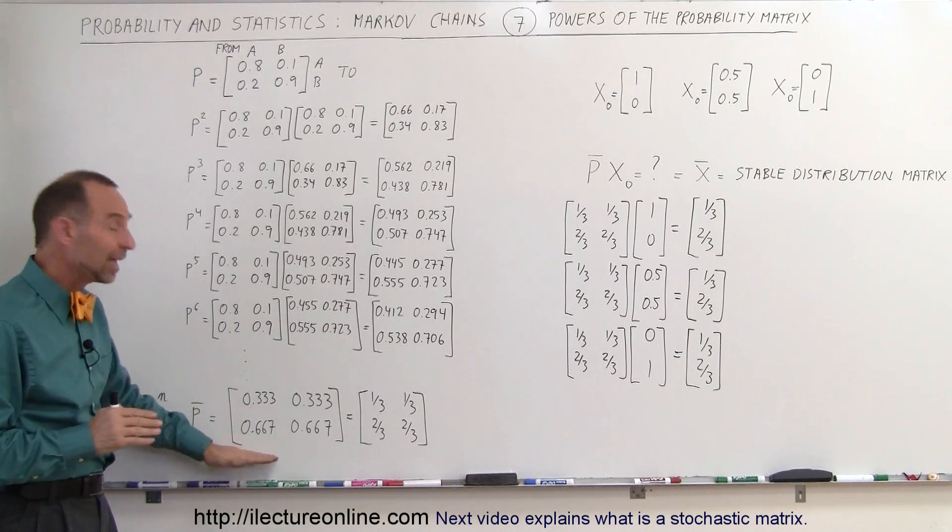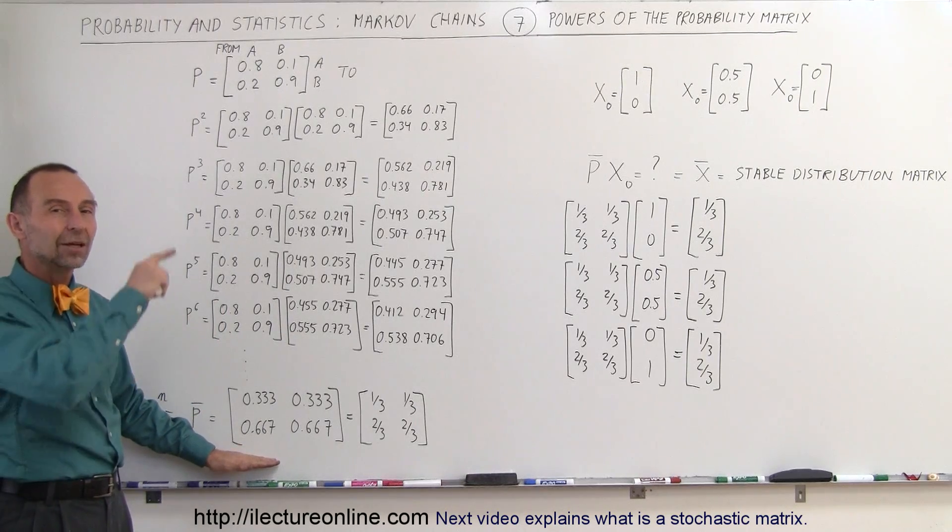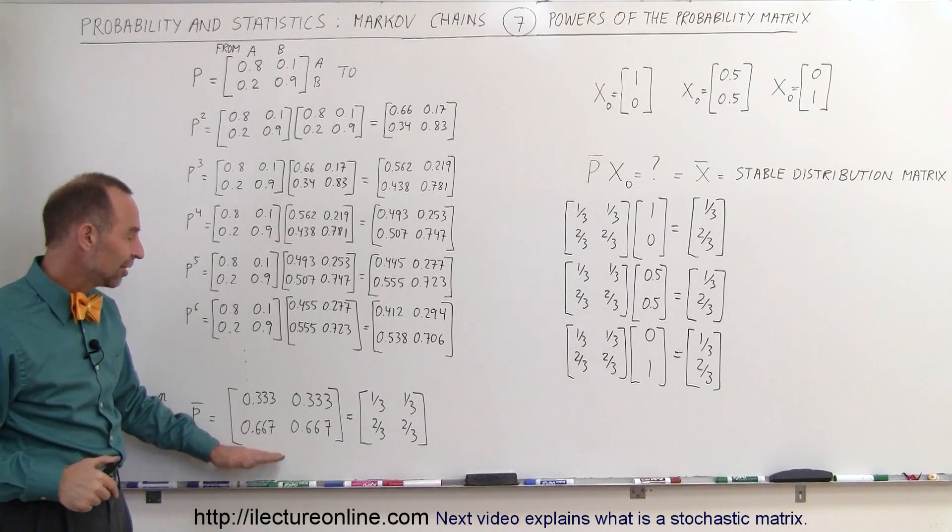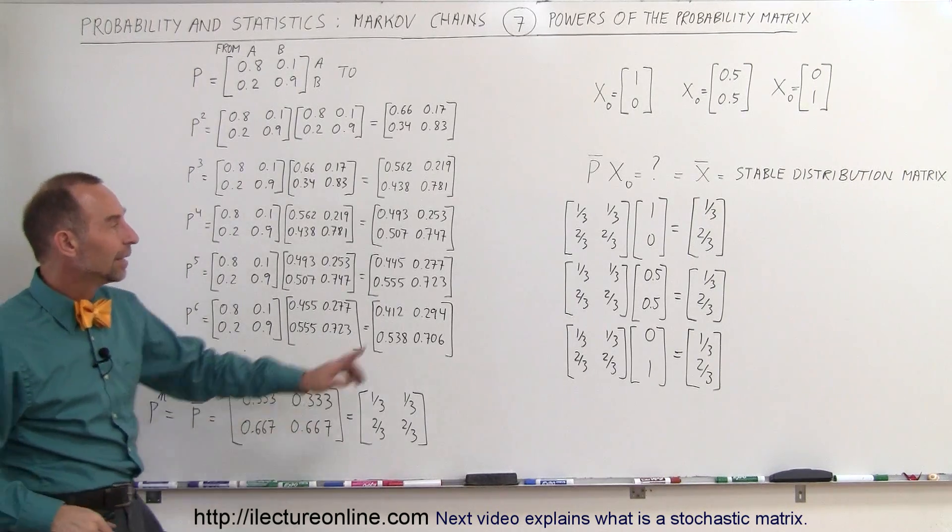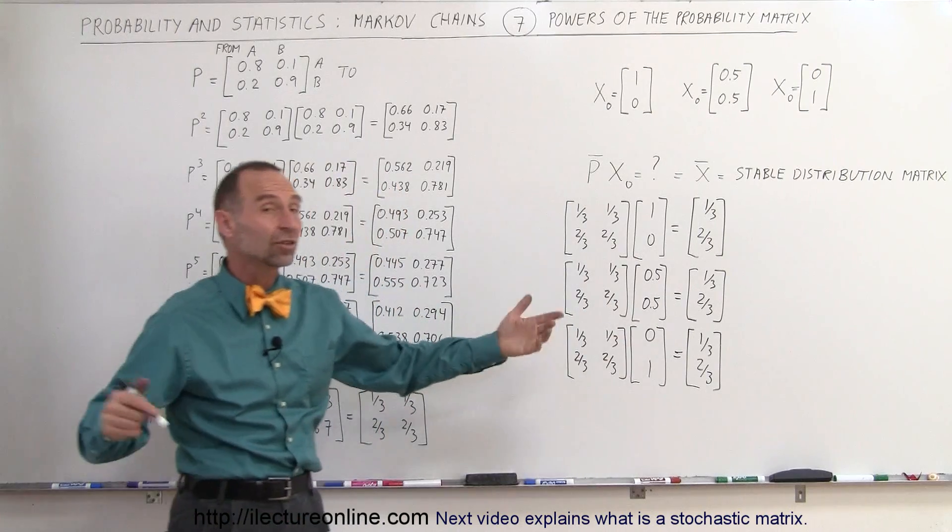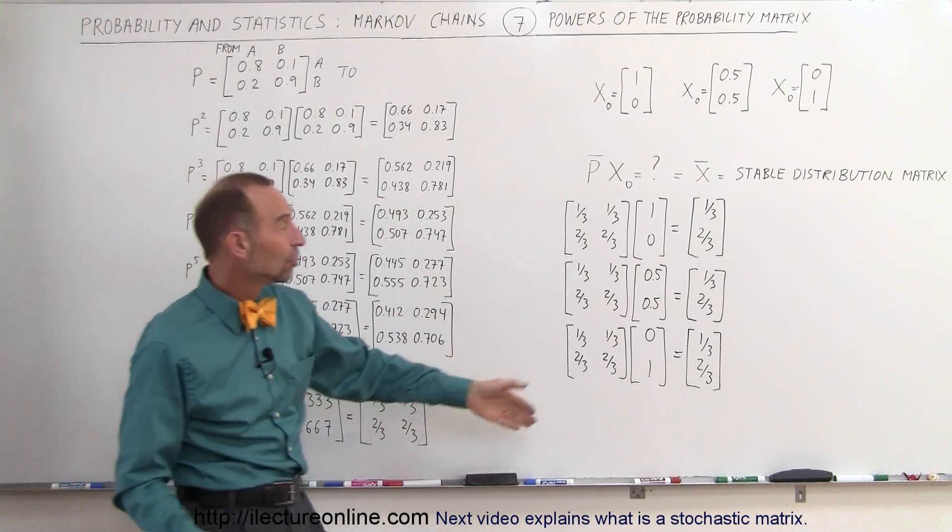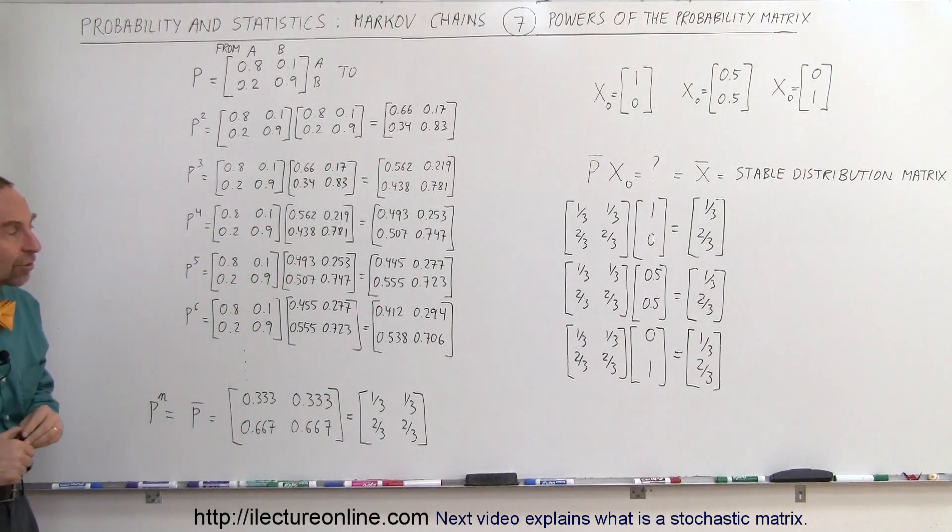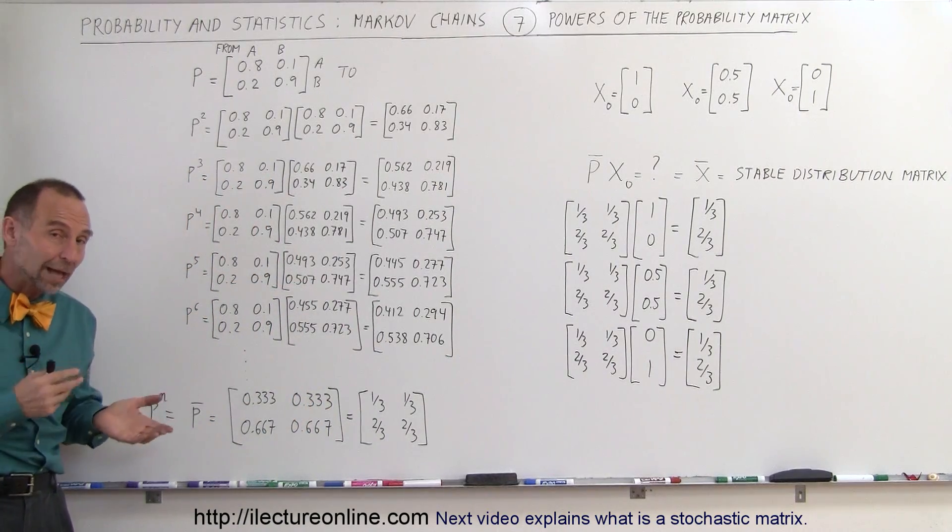But the basic idea is, get the stable probability matrix by taking the initial probability matrix and multiply it by itself n number times, until the numbers become stable, then multiply it times whatever the initial condition is, it doesn't even matter, and you'll get some stable final condition. That's where you'll end up using that probability matrix. And that's how we do that.